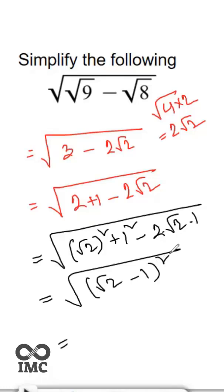Square root means the power will be divided by 2, so square root and square will be removed. Then final answer will be root 2 minus 1, and that is the solution of this problem.